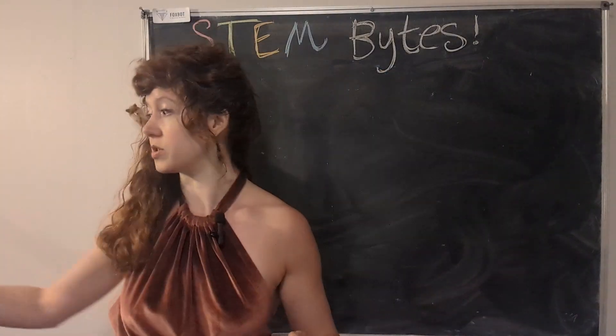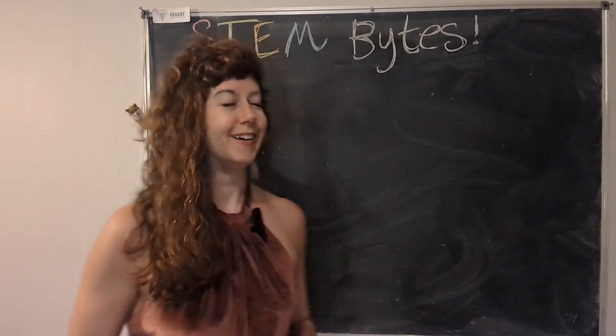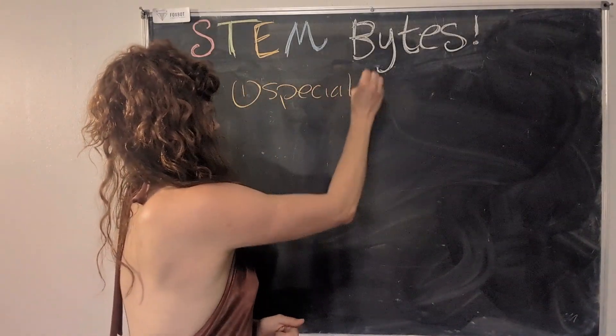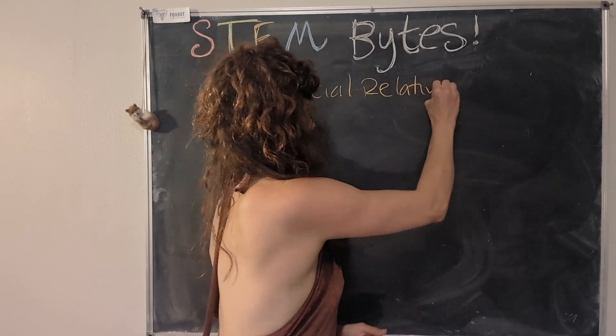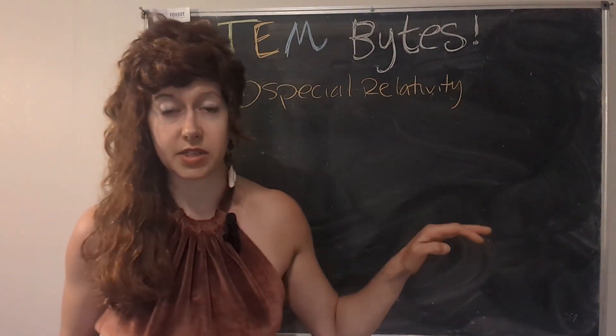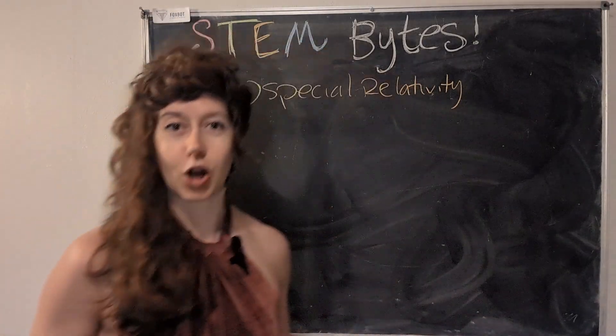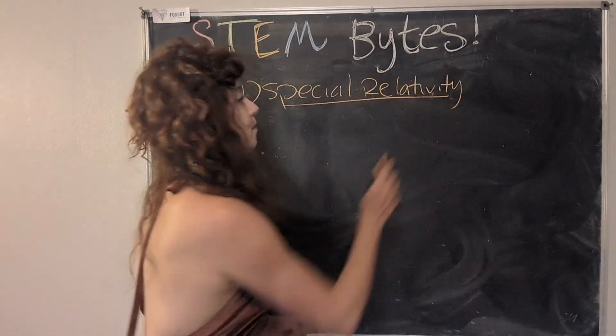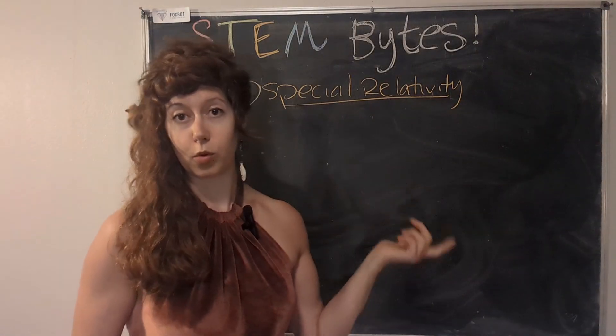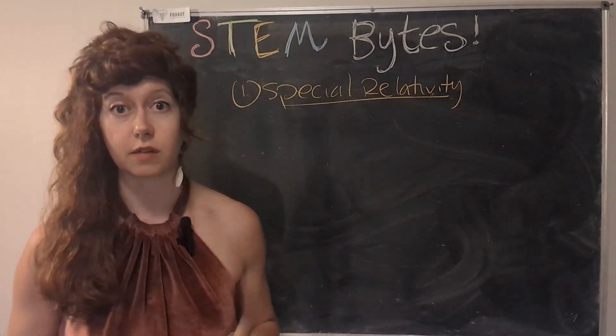There's actually two parts of relativity. The first is called special relativity because we're very special. This deals with objects moving at constant speeds. So if I'm running along and I'm running a constant 10 minute mile, that means I am moving at constant speed. We're not talking about acceleration. And it turns out that when you're moving at constant speed, some interesting things happen, particularly when you are moving close to the speed of light.